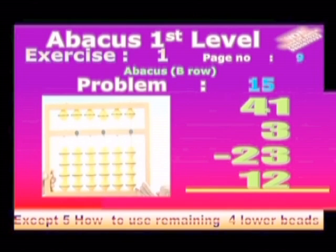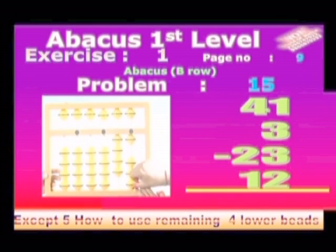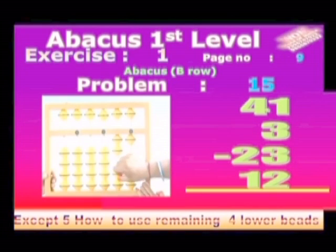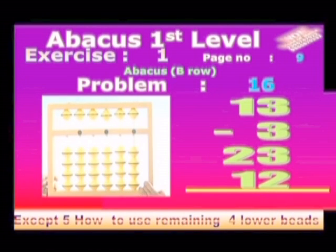41: 4 in 10th place, 1 in 1's place. Add 3 in 1's place. Minus 23: minus 2 in 10's place, minus 3 in 1's place. Add 12: 1 in 10's place, 2 in 1's place. Answer is 33. Problem no. 16.